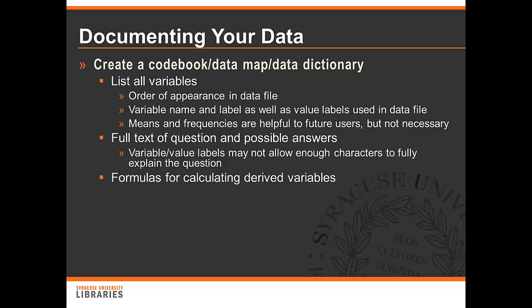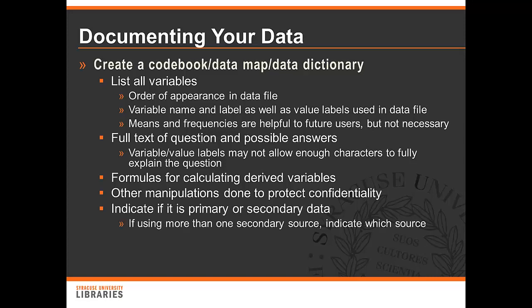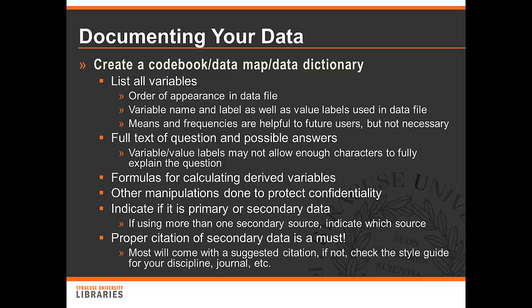Be sure to include all formulas for calculating derived or computed variables. Also include other manipulations that you may have done to protect respondent confidentiality, such as top or bottom coding. If you're using secondary data, you should indicate if a particular variable is primary — meaning you collected it yourself — or if it is part of the secondary data. If you're using more than one secondary source, indicate from which source that variable came. Remember, proper citation of secondary data is a must. Most will come with a suggested citation. If not, check the style guide for your discipline or the journal you'll be submitting to in order to determine the correct format.